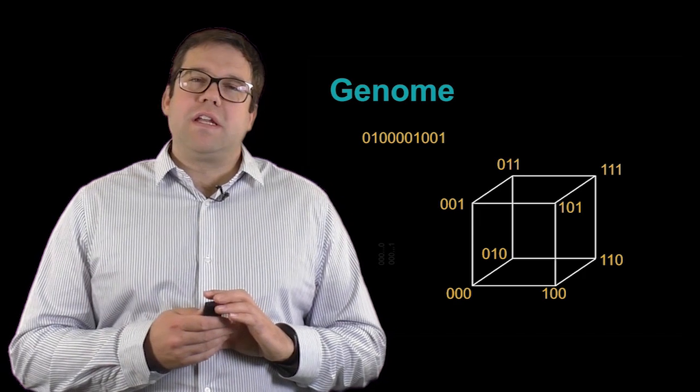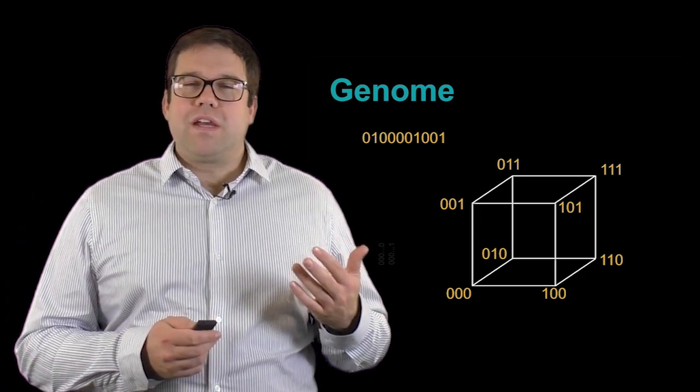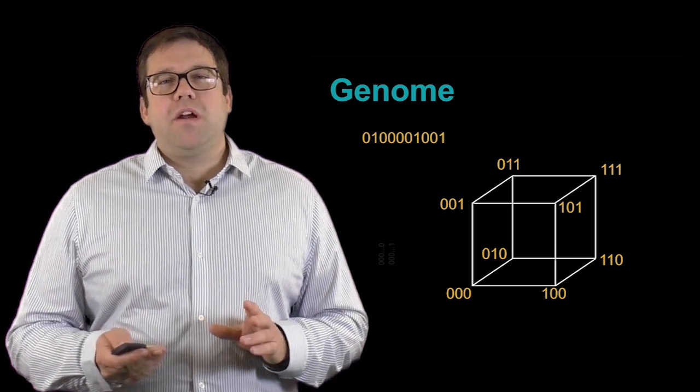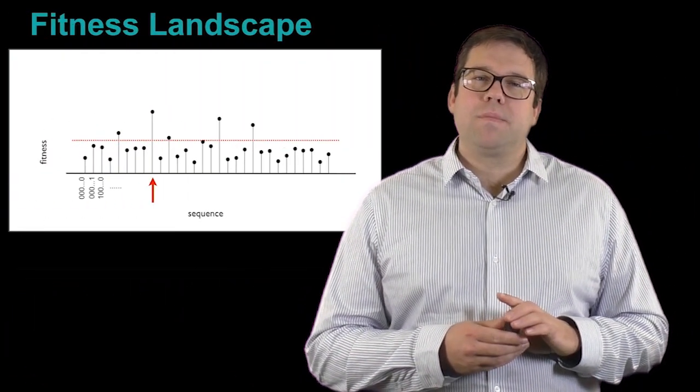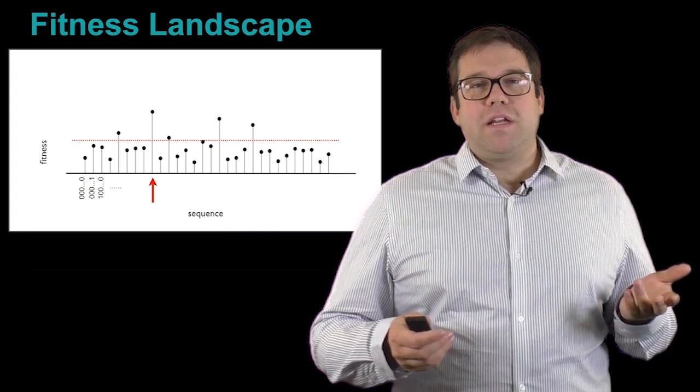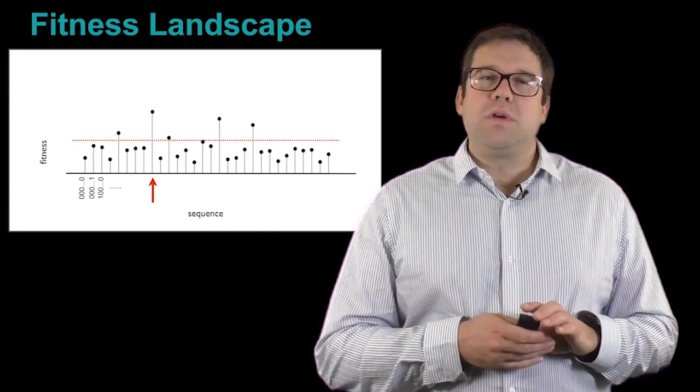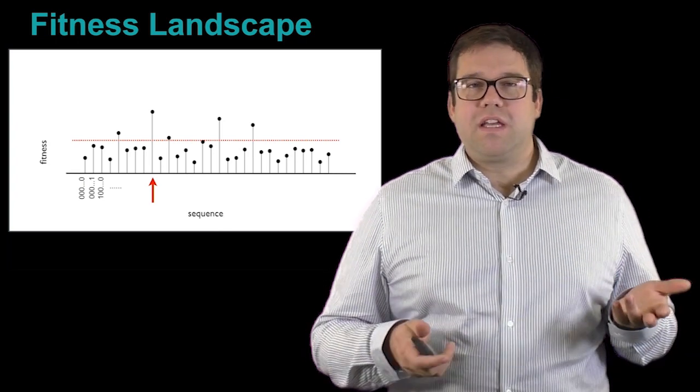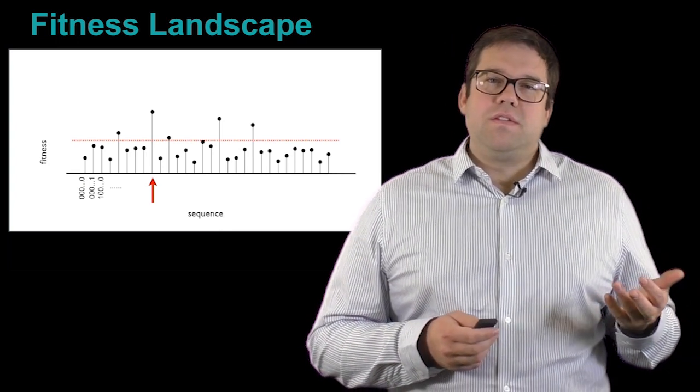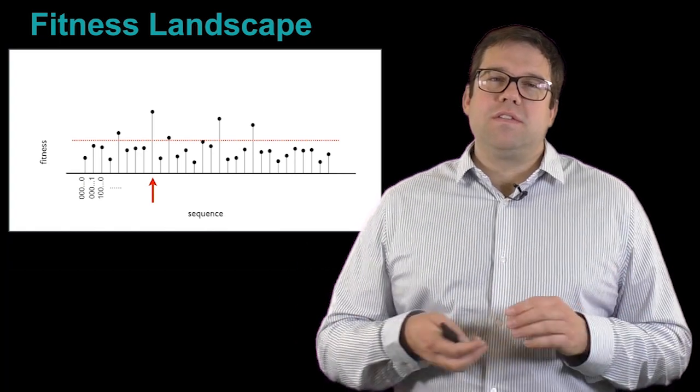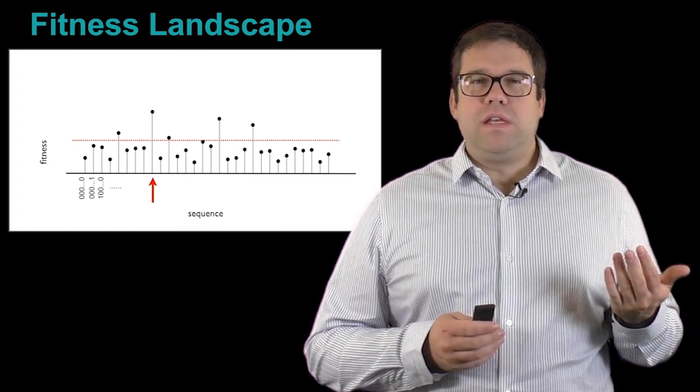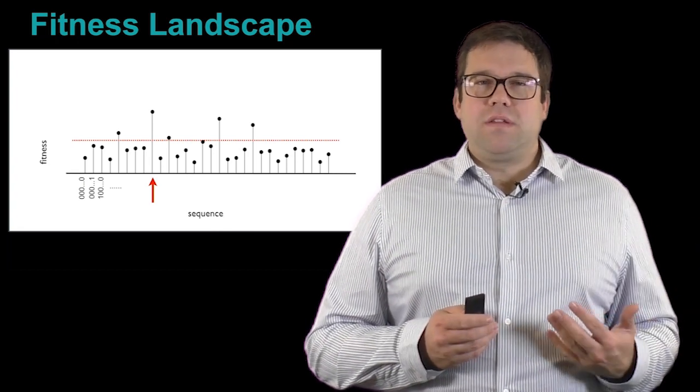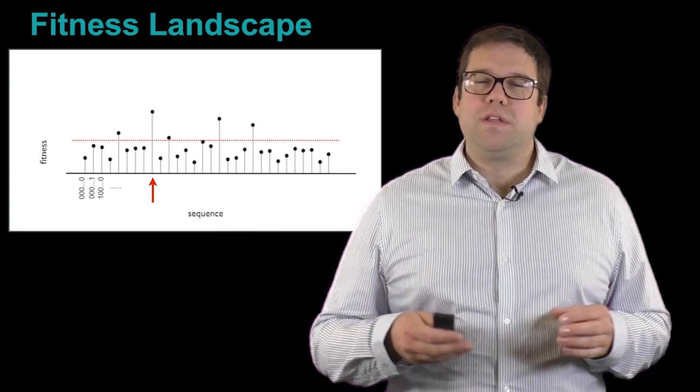All of that being said, how do we start to get a handle on what evolution is actually doing, how evolution is selecting for individual genomes? Here we can go back to an old idea of the fitness landscape. In this binary language of genomes, we could think about writing down every single string possible of a given length L of zeros and ones. Then we can think about measuring the fitness of those sequences in a fixed environment.